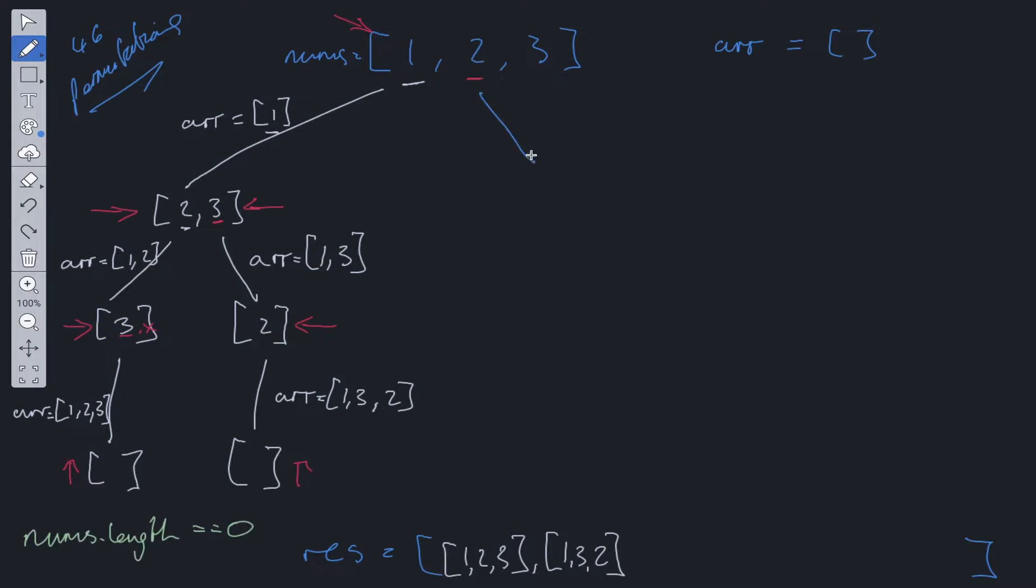So we take two and push it into the array. Then we're left with one and three. We take one, so the array becomes two and one. Then we're left with three. Then we take it and push it into the array. We have two, one, three.